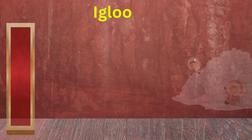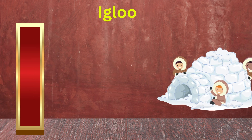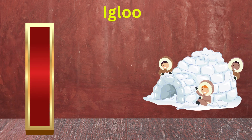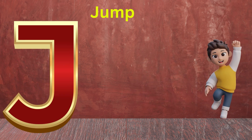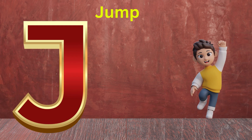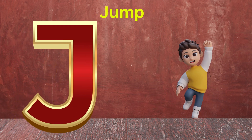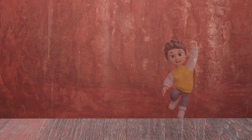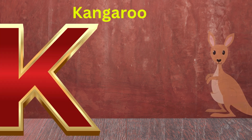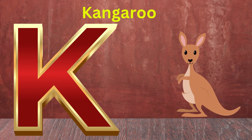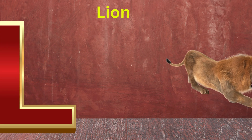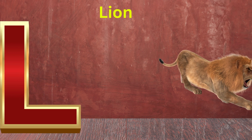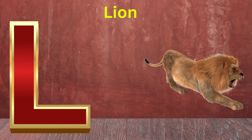I is for Igloo, I-I-Igloo. J is for Jump, J-J-Jump. K is for Kite, K-K-Kite. L is for Lion, L-L-Lion.